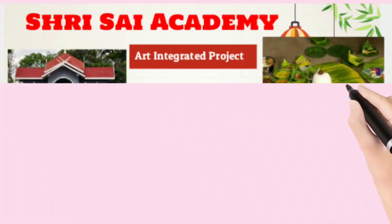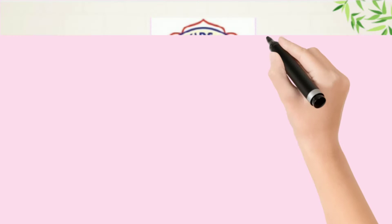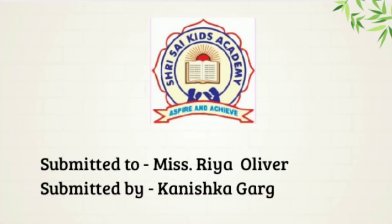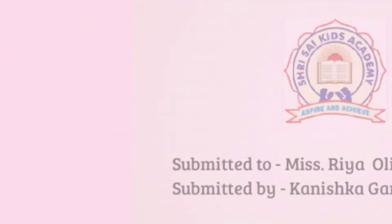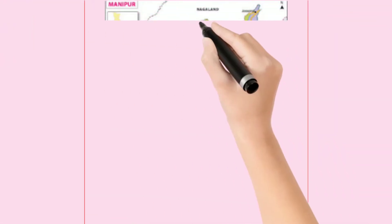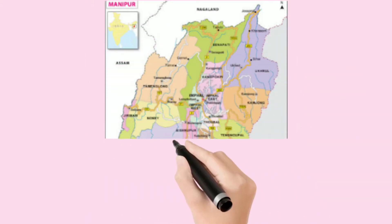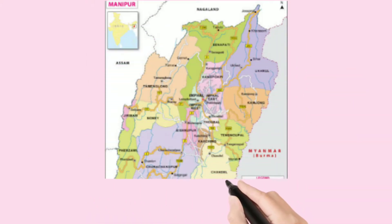India is a mosaic of ancient traditions and rich cultural patterns in its states, and one of them is Manipur. It is bounded on the north by Nagaland, south by Missouri, east by Myanmar, and west by Assam.